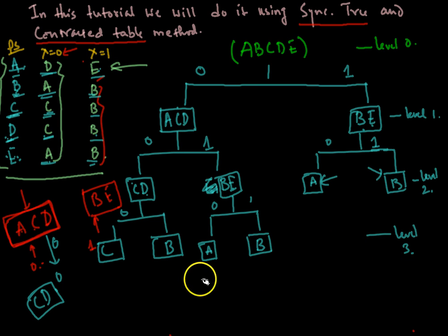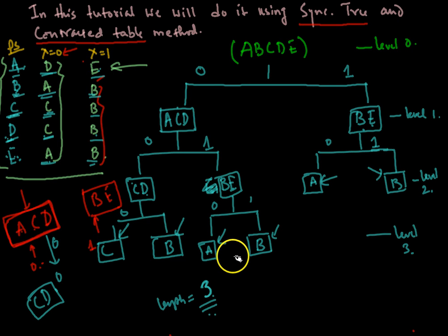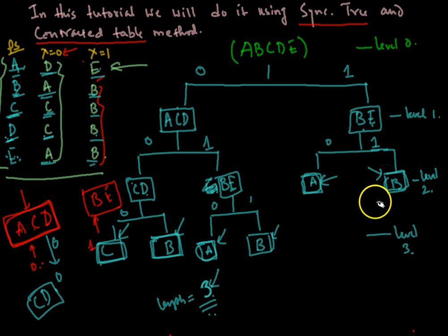If we supply a string of length 3, we can definitely reach a single state — either A, B, or C. So we can determine the present state of the machine. This is indeed a definite machine of order of definiteness 3. To summarize: check whether the tree ultimately goes to leaves — if yes, it is a definite machine; if not, it is not a definite machine.